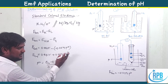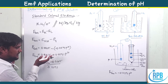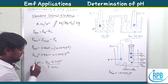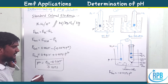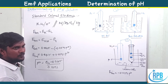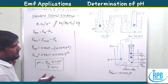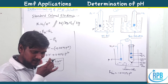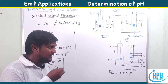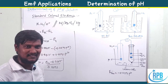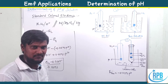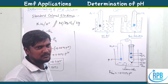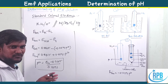Rearranging: pH = (E cell − 0.2415) / 0.0591. This is the simplest method to determine the pH of any unknown solution using the standard calomel electrode. However, this is not suitable for routine measurements because it requires a hydrogen gas setup, a lot of solution, and the platinum wire surface becomes poisoned over time.